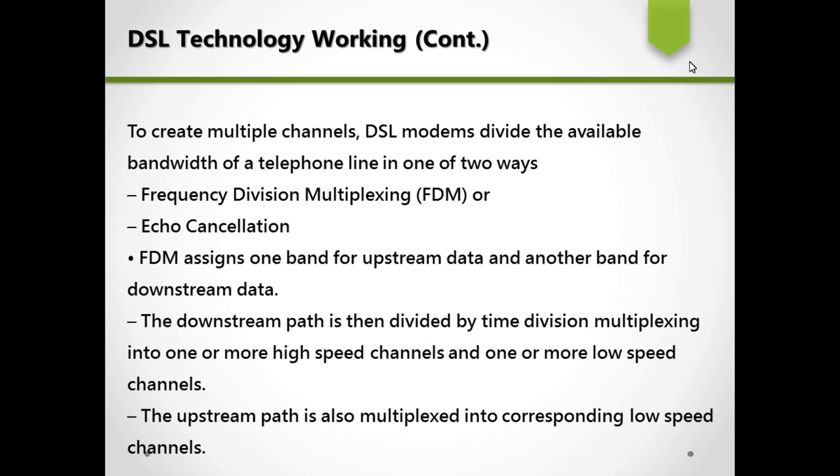Let's see how multiple channels are used in DSL technology. A DSL modem divides the available bandwidth of the telephone line in one of two ways: frequency division multiplexing or echo cancellation. With frequency division multiplexing, one band is used for upstream data and another band for downstream data. The downstream path is then divided by time division multiplexing into one or more high-speed channels and one or more low-speed channels. The upstream path is also multiplexed into corresponding low-speed channels.